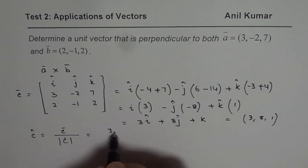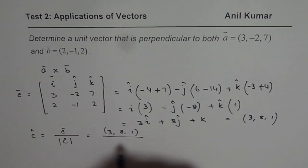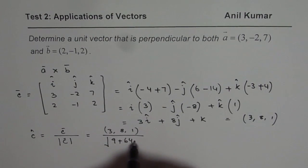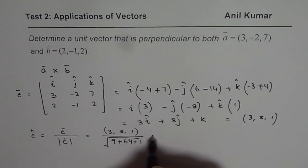So we have the vector (3, 8, 1). And divide it by the magnitude, so it is 3 squared, which is 9, plus 8 squared, which is 64, plus 1.